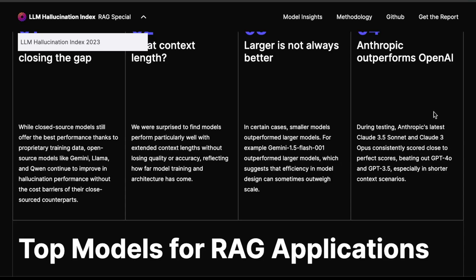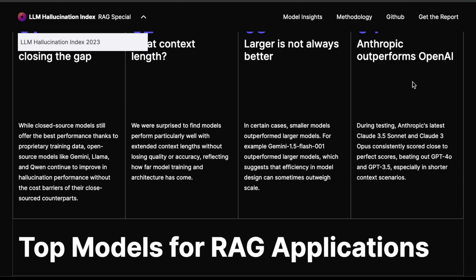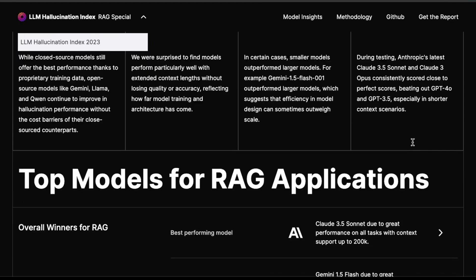I believe these models have very similar capabilities, and also very specific capabilities that they do really well — this is something I've been experimenting with and sharing online. It's interesting that they find the Anthropic models, as many argue online, are much better, especially Claude 3.5 Sonnet which is much better than GPT-4o.